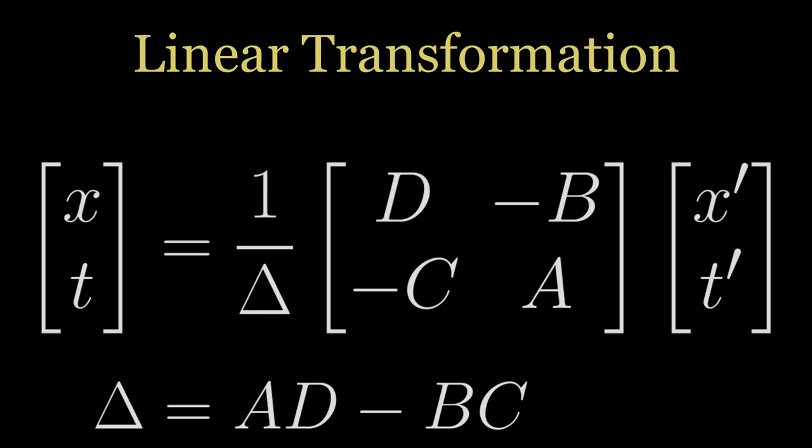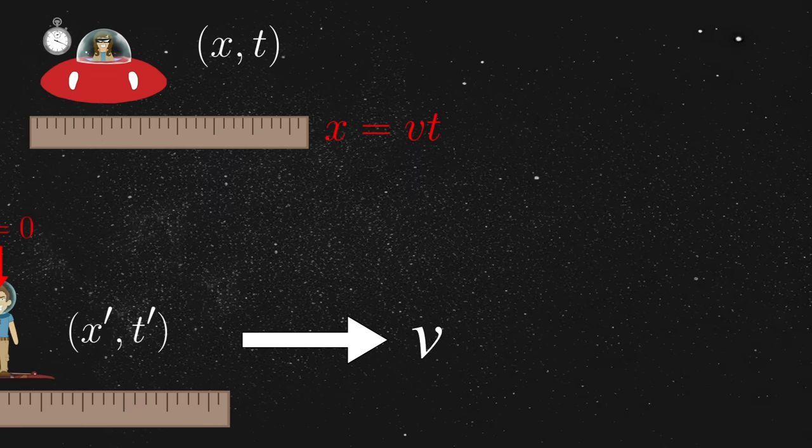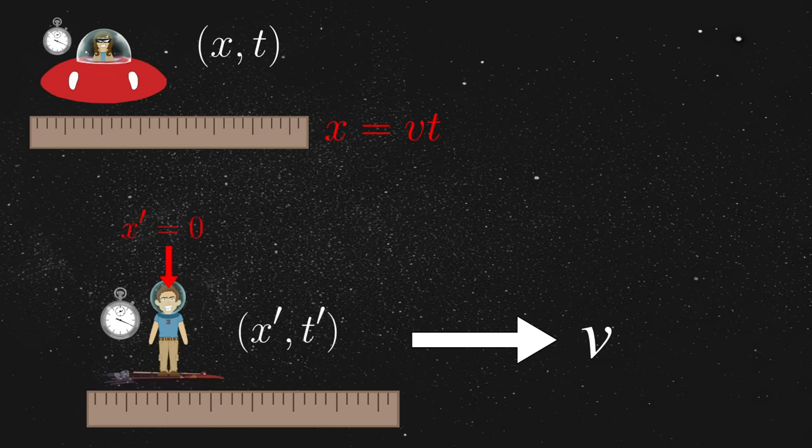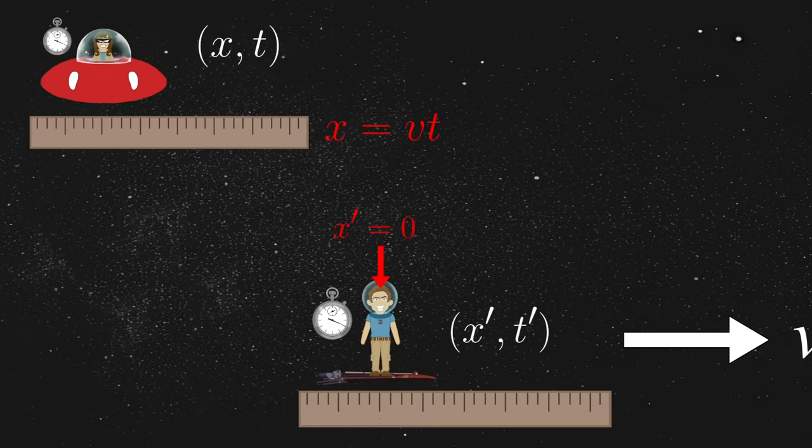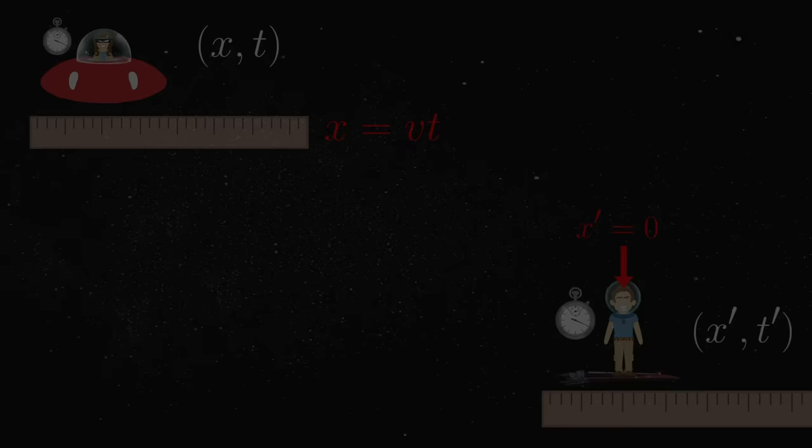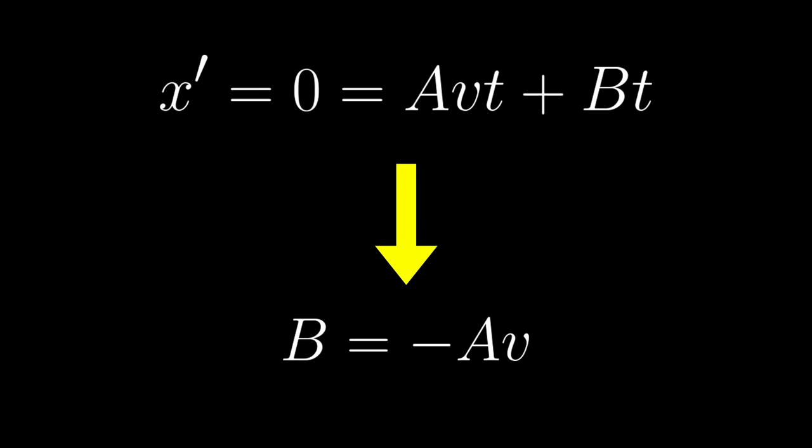All that remains for us now is to derive the four mystery coefficients within the matrix. To that end, consider what would happen if Annie measures Jim's location. Again, by the law of inertia, she has to observe a straight-line trajectory satisfying x equals v times t. By definition, however, this same location also corresponds to Jim's origin at x prime equals 0. Let us therefore substitute this information directly into the transformation for x prime, such that x prime equals 0, which is equal to avt plus bt. A little bit of algebra later, and we now find that the constant b must satisfy b equals negative a times v.